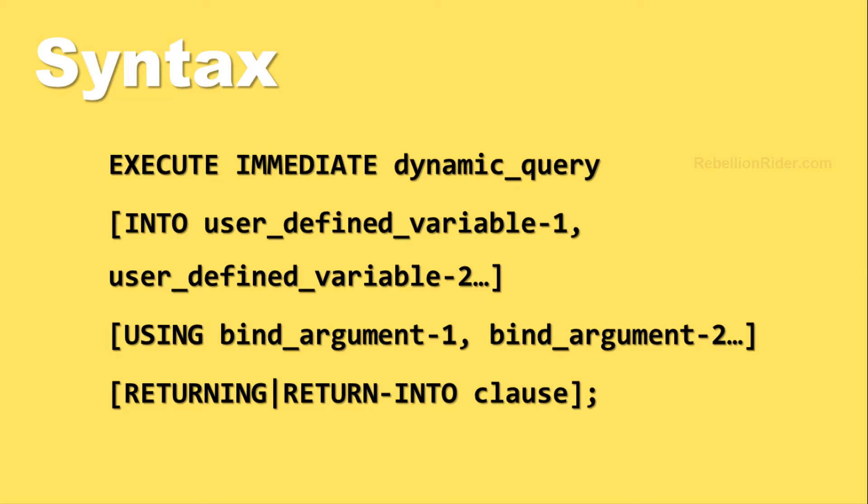Let's quickly take a look at the syntax of the EXECUTE IMMEDIATE statement. The syntax starts with the reserved phrase EXECUTE IMMEDIATE, followed by the query. This query could be a SQL statement or a PL/SQL block. The compiler treats the dynamic query as a string of VARCHAR2 data type, so you have to make sure that you enclose your query in a pair of single quotes. We will learn how to write a dynamic query properly for EXECUTE IMMEDIATE when we do the example.